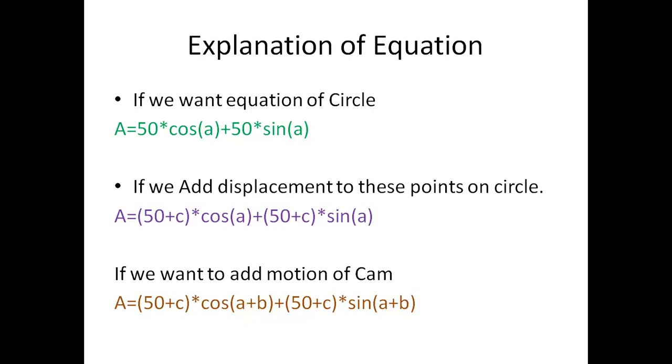Plus the b, that is the value of slider. Initially if the point is at 30 degrees, we'll write 50 plus c cos of 30 plus b, where b will define the slider. This was basics about the theory.